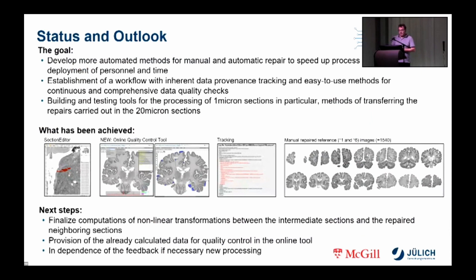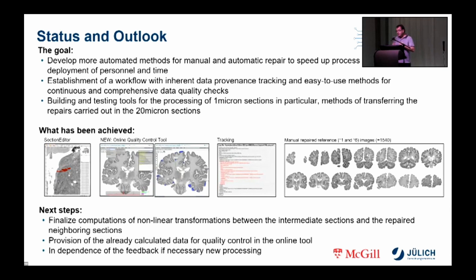To summarize, the goal of this part of the project is the development of more automatic methods for manual and automatic repair to speed up the process in terms of staff and time. We presented several tools that speed up the process; in addition, the processes themselves have been simplified, making them more robust and practical. These newly developed tools are currently being applied to the BigBrain 2 data and will be further improved and optimized. The aim is also to develop and test tools that are suitable for the next generation — the third BigBrain. In particular, we are working on methods to transfer the processing carried out in the 20 micron sections to the 1 micron sections.